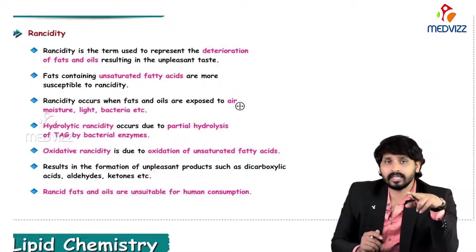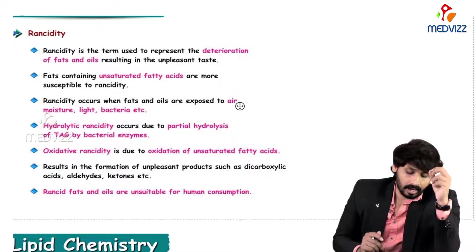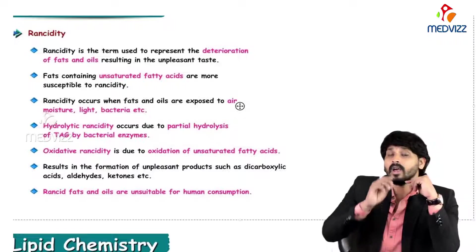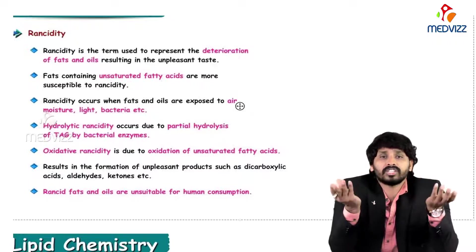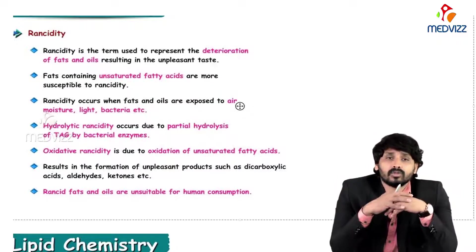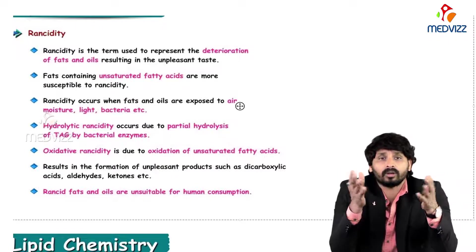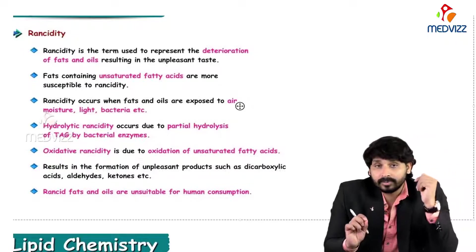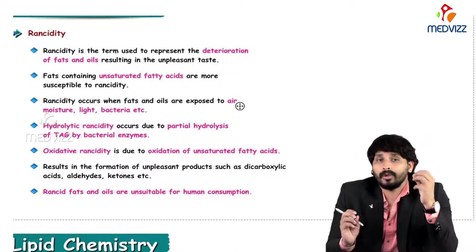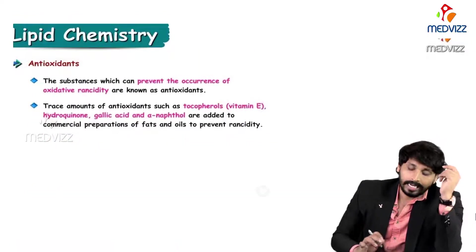There are types of rancidity: hydrolytic rancidity and oxidative rancidity. Hydrolytic rancidity is caused by partial hydrolysis of TAG by bacterial enzymes - when bacteria act on a particular lipid or TAG. Oxidative rancidity means oxidation of unsaturated fatty acids - when exposed to oxygen they undergo oxidation and deteriorate to develop unpleasant taste and odor. Rancid fats and oils are unsuitable for human consumption.